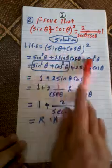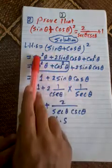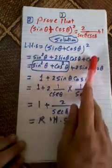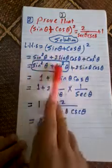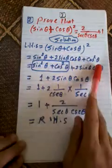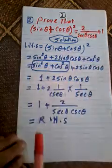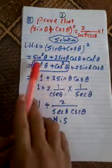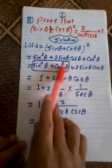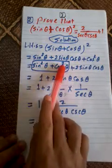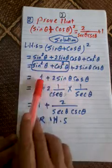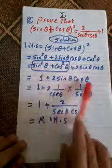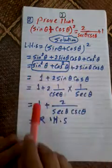Reorder the terms: sine squared theta plus cosine squared theta equals one. So the expression becomes one plus two sine theta cosine theta.